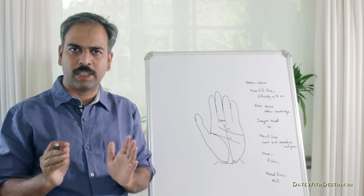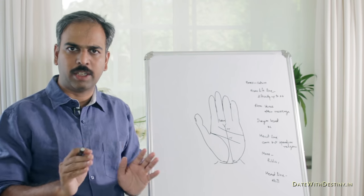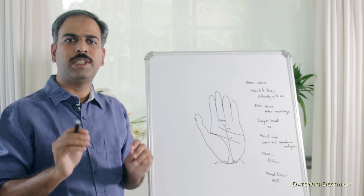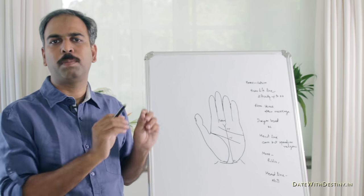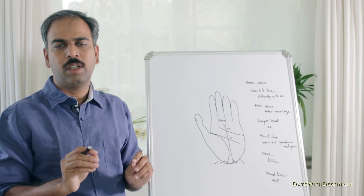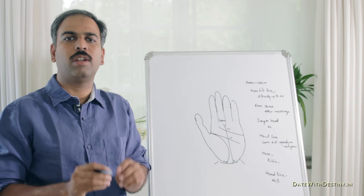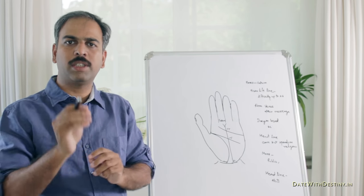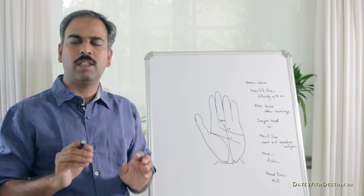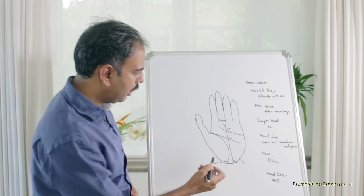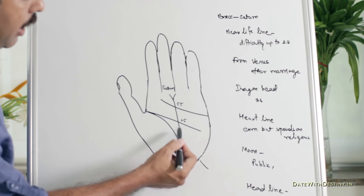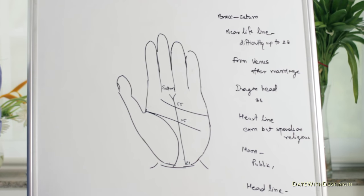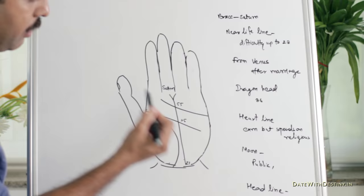First, I will tell you what Fate Line is and where it is present in hand. Any line which starts from anywhere and reaches up to the Mount of Saturn after crossing the Heart Line, or it may be going towards the Mount of Saturn, is called Fate Line. In this diagram, this is the Fate Line. It is starting from the bracelet and going up to the Mount of Saturn.